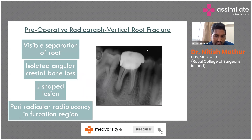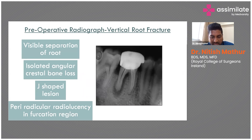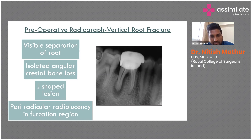The radiographic appearance of a vertical root fracture (VRF) depends on the position of the fracture within the root and the degree of displacement. It is very difficult to assess from a periapical radiograph until obvious signs appear, though we can still make out VRF cases to some extent, although CBCT is recommended.